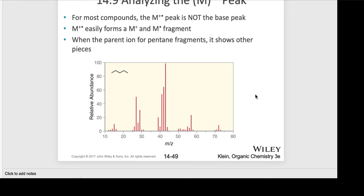For most compounds, the radical cation initially formed is not the base peak, often because it can fragment into more stable ions or radicals. When we're looking at pentane — shown here as a skeletal drawing — you want to figure out the molecular formula: five carbons and twelve hydrogens. The base peak here is actually at 43. What could 43 be? There are some common fragments that appear especially with simple alkanes.